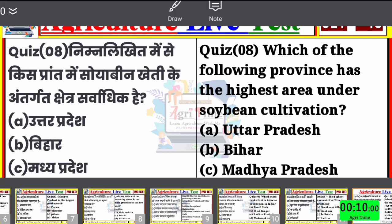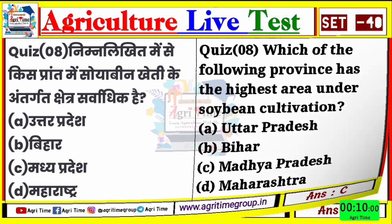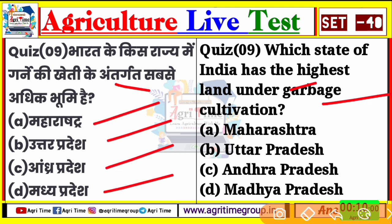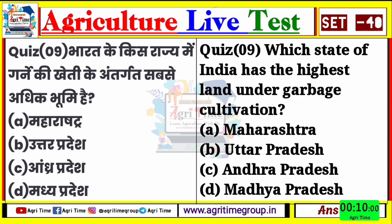चलिए बढ़ते हैं अगले question के ओर question number 9। ये रहा आपके screen पर - भारत के किस राज्य में गन्ने की खेती के अंतर्गत सबसे अधिक भूमि है? Which state of India has the highest land under sugarcane cultivation? Options दिये हैं: महाराष्ट्र, उत्तरप्रदेश, आंध्रप्रदेश और मध्यप्रदेश। ये question अक्सर exam में पूछा जाता है। Comment कीजिए।